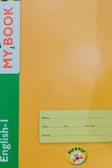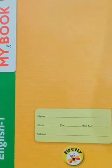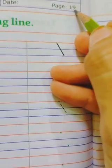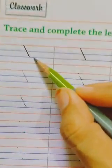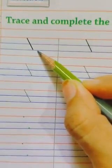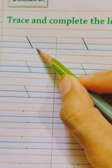So all of you check out your MySQL book and open page number 19. So which line is this? This is left slanting line.